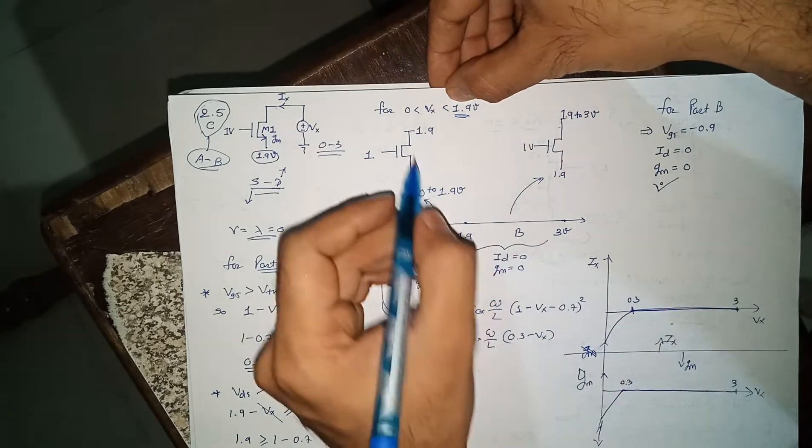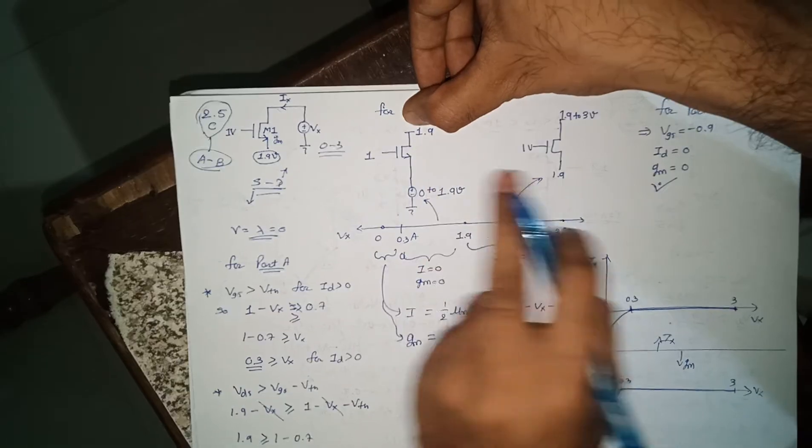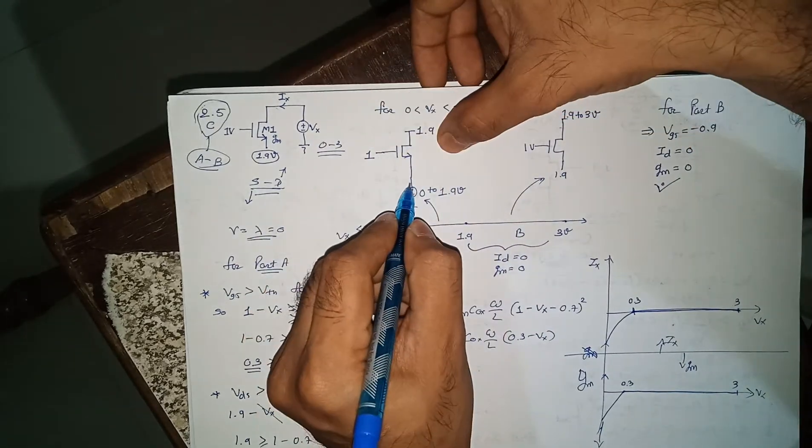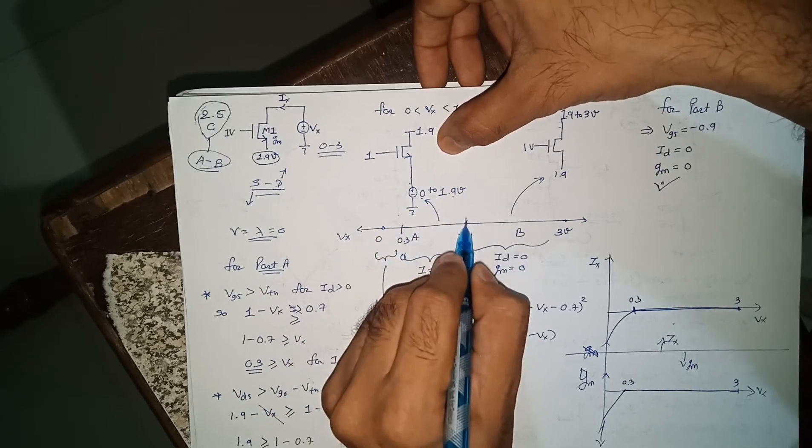From 0 to 1 volt your circuit will look like this: 1.9 will be connected at drain, here you will connect gate is 1 volt and source is variable from 0 to 1.9. This is part a.